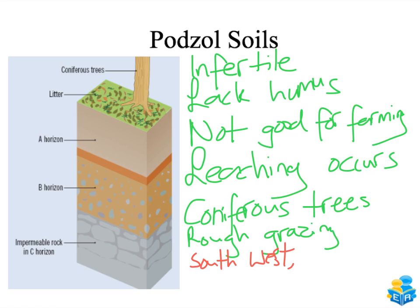Podzol soils don't get much humus because they don't have deciduous trees — they have coniferous trees around them. As coniferous trees don't lose their leaves in autumn, they don't gain that humus. They're used for rough grazing — you might find goats grazing here. They're found in the south west of Ireland, Donegal, and Mayo.